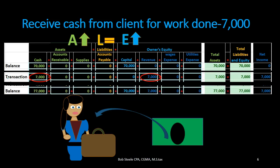We then need the ending balance. The beginning balance is in balance, this is what happened this transaction, and now where are we? Cash was at $70,000, we received $7,000 more, so we are now at $77,000 in cash. The capital account stays at $70,000. Revenue went from zero to $7,000. Bringing down all the other zeros, total assets of $77,000 equals total liabilities and equity of $77,000, and net income is $7,000 at this point.